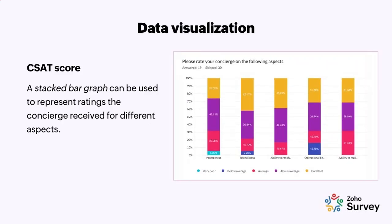Things get more interesting with two-dimensional data. For example, the EOS wants respondents to rate the concierge on different aspects like promptness, friendliness, and ability to resolve issues. In this case, data is best represented using a stacked bar graph. Looking at ability to resolve issues: 38.89% say the concierge was excellent, 44.44% say above average, and 16.67% say average. This is a stacked bar graph.